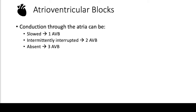Now we're going to move on to AV blocks. Whenever we talk about AV blocks, you should think of it as an effect on the conduction from the atria to the ventricle that is somehow damaged. First degree AV block involves slowed conduction, second degree involves intermittent interruption, and third degree involves no conduction at all — with the atria and ventricles beating at their own intrinsic rates.